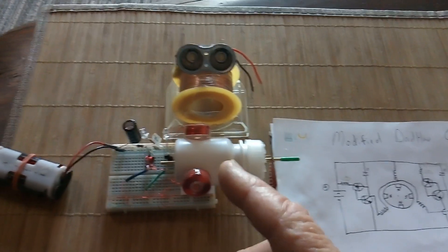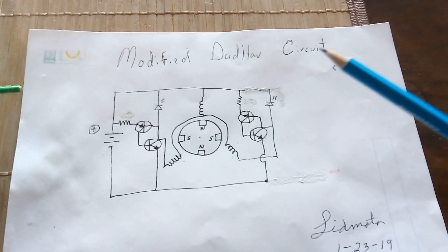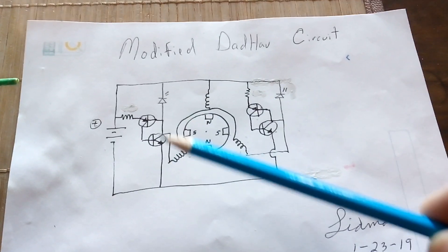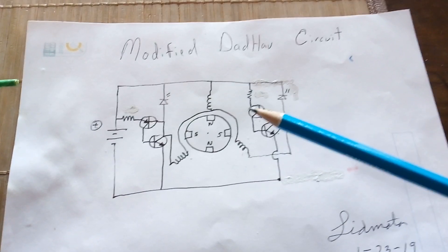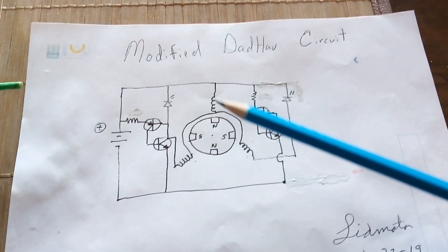Years ago Dad Have came up with a way to do it, and this is a modified Dad Have circuit where he took two complementary pairs of transistors and was able to fire off the coils in two pairs, so it's really two-phase.